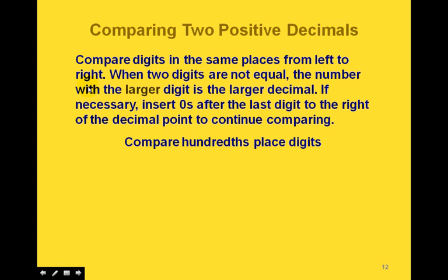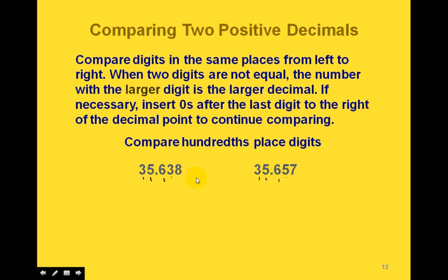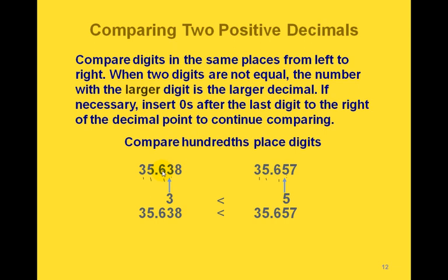For example, comparing these two decimal values: the digits in the tens place are both 3s — equal. The digits in the ones place are both 5s — equal. The digits in the tenths place are both 6s — equal. Finally, we reach a place where the digits differ: we have a 3 and a 5. Since 3 is less than 5, the number on the left is less than the number on the right.